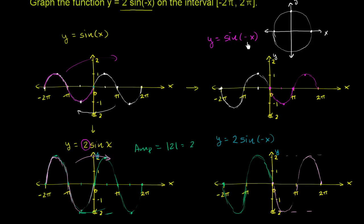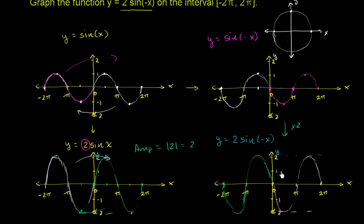Alternatively, if you start with sine of negative x and go to 2 sine of negative x, notice the difference between the two graphs — we just have twice the amplitude. We're multiplying by 2, so you get twice the amplitude.